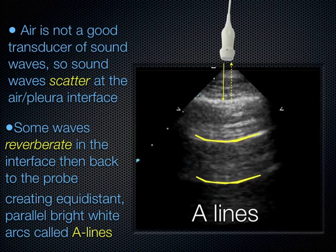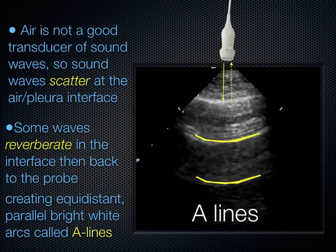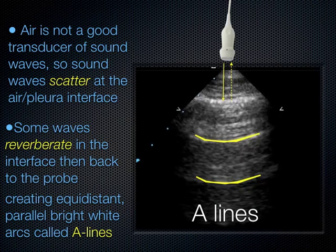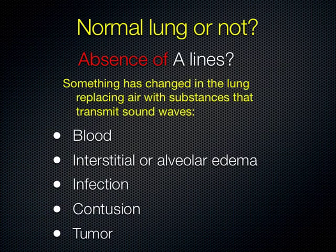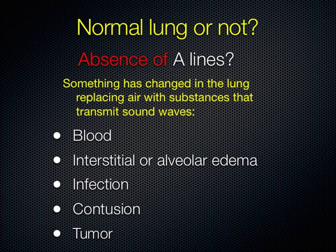Normal lung will have A lines. Pneumothorax will also have A lines — so A lines do not necessarily mean normal. A student asks: does it depend on what frequency you use? It doesn't really depend on frequency — there's such a huge difference between the acoustic impedance of the pleural line and the air next to it that you'll see this resonance phenomenon with most any probe. The depth of the line doesn't change — it's from the chest wall to the VPPI, with multiples of that spacing going down.